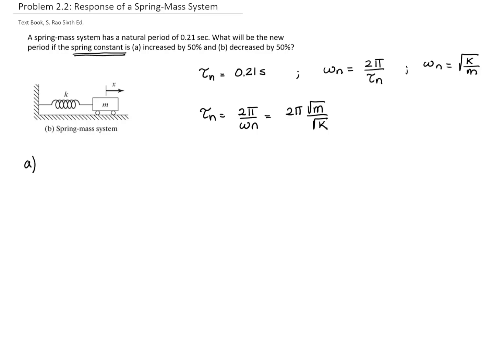So let's start with part A. They say that they want to increase the constant of the spring by 50%. Therefore, the new constant of the spring will be 1.5 times the original constant of the spring.